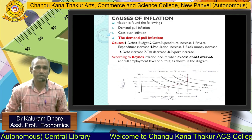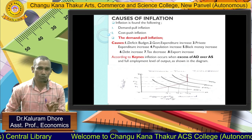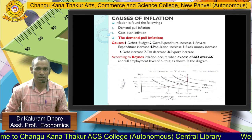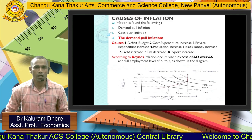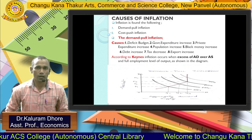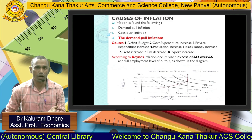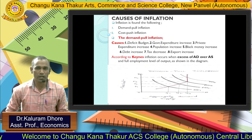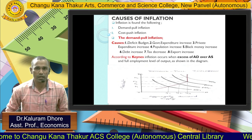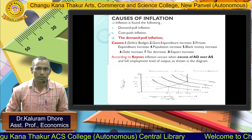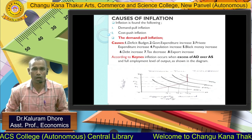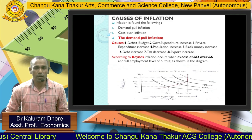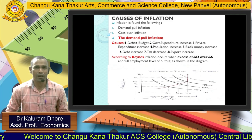The first cause is deficit budget. If your income is less than your expenditure, that is a deficit budget. You are spending money beyond your income. The government also introduces a deficit budget whenever it needs to invest. The second cause is government expenditure increase — when government spending rises, employees get more money and start demanding more, which increases prices.